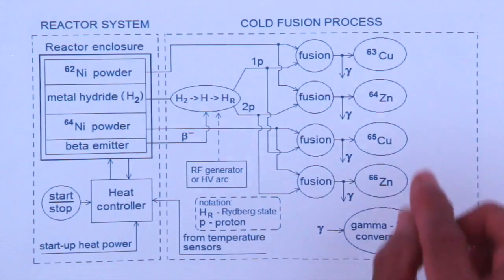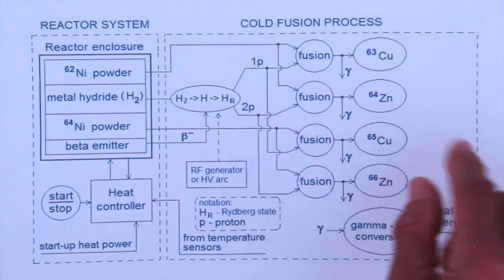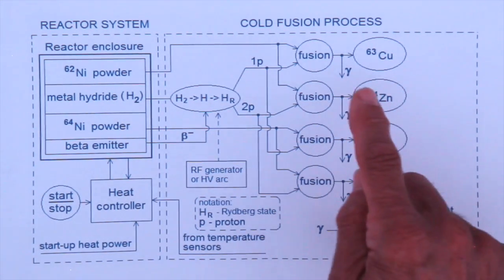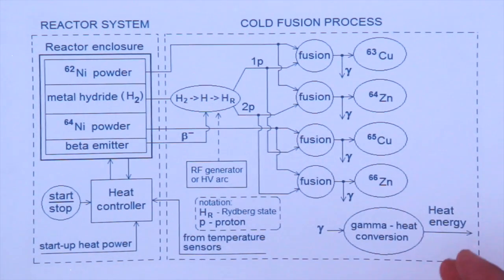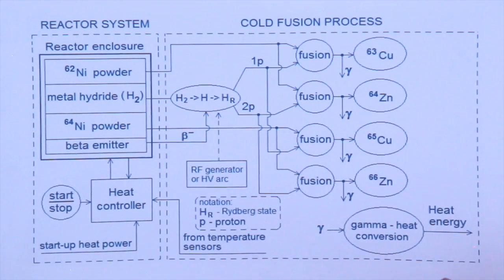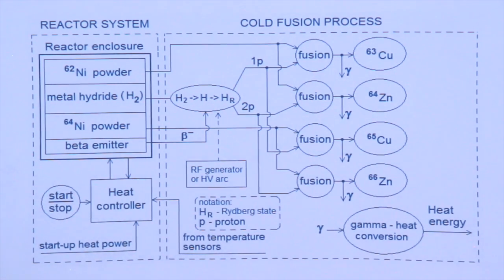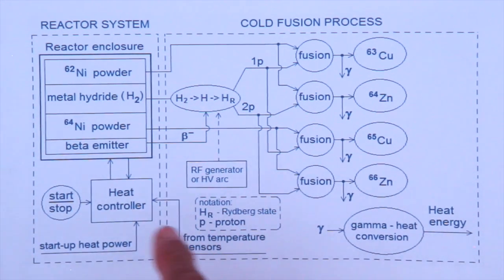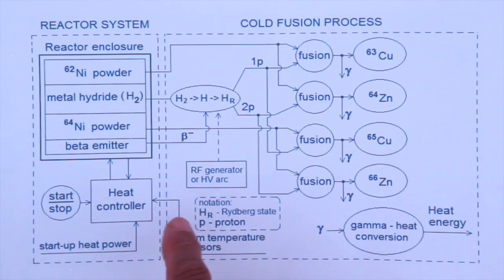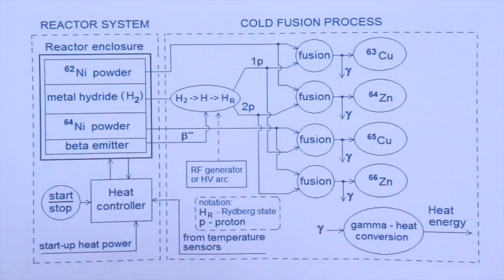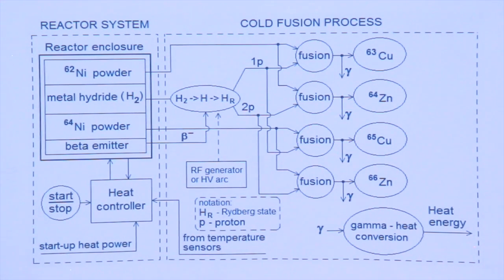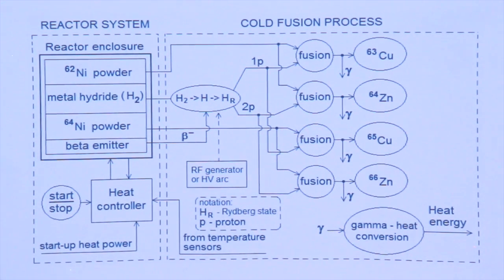As a result of the reaction we get gamma emission, and this gamma is converted to heat — so the output is heat. For starting the process, some heat is needed, because the metal hydride must be heated in order to release the hydrogen.